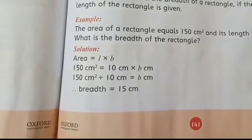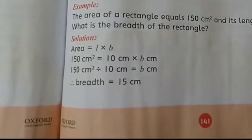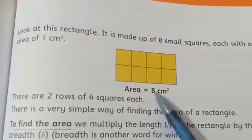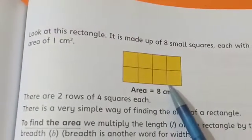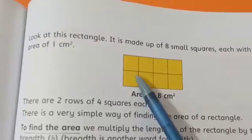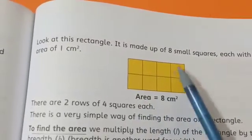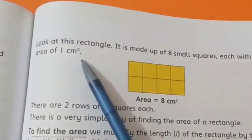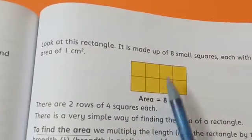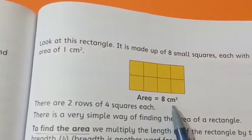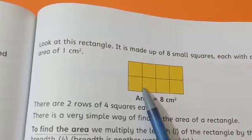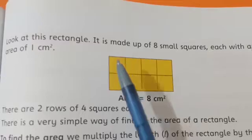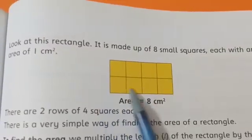Now come to page number 141. Now students look at this rectangle. And it is made up of 8 small squares. One, two, three, four, five, six, seven, eight. Each with an area of 1 cm². So how do we write the area of this rectangle? 8 cm². Look at this image carefully again. There are 2 rows of 4 squares each. First row and second row.